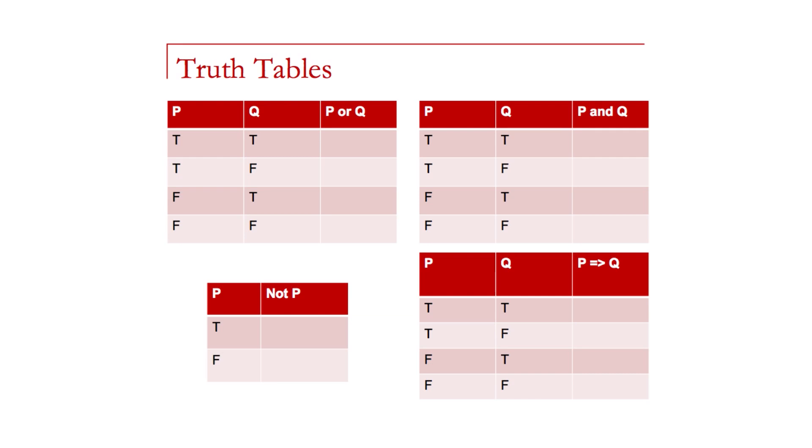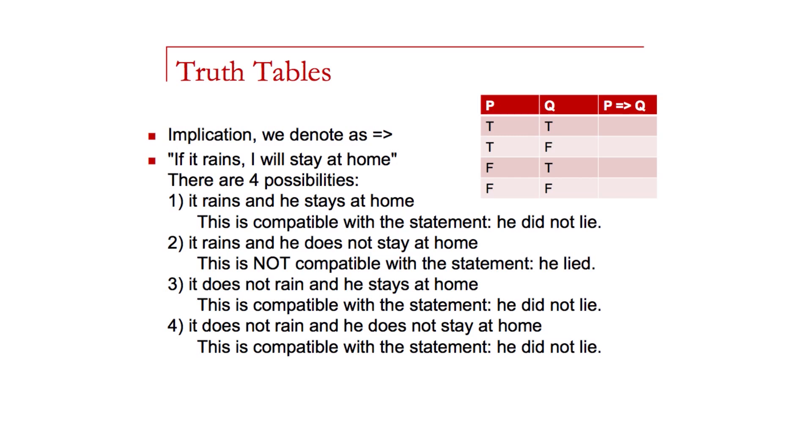Another operator is the implication operator. This is true in all cases except the second line here where a true precedent implies a false antecedent. The implication is declared here in this truth table. Think of the expression: if it rains, I will stay at home. So there's four possibilities. It rains is true and I stay at home, that's also true. If it rains and I don't stay at home, this is actually inconsistent with the statement and I lied. Because it did rain, but I did not stay at home. So the second line is the only case here where we have false.